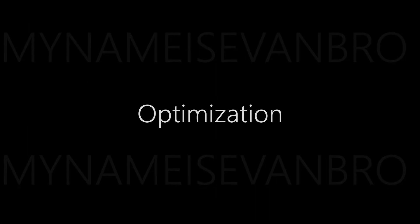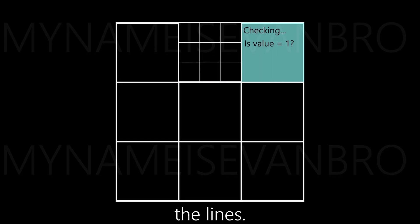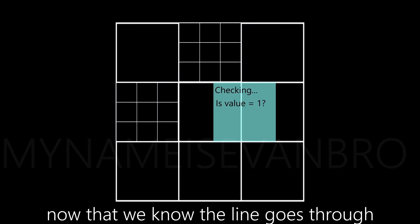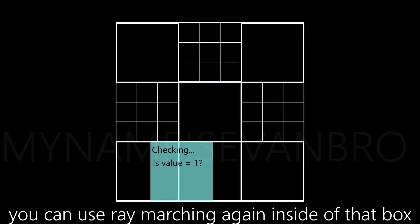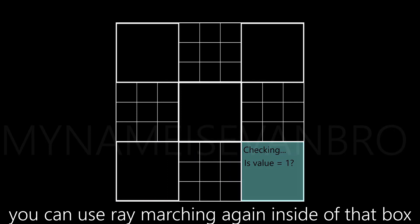Optimization. To fix this, you can use a bigger grid and draw the lines. Now that we know the line goes through somewhere in this square, you can use ray marching again inside of that box to make a higher resolution grid.